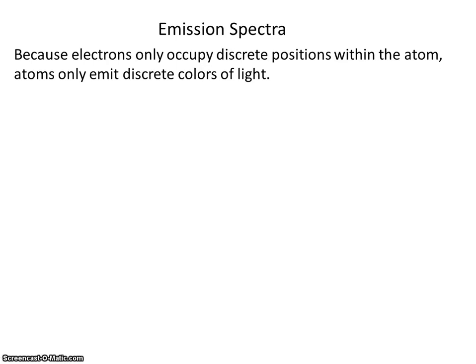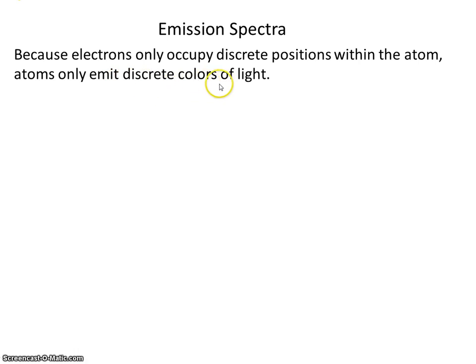In this video, we're going to be taking a look at the emission spectrum for hydrogen. Recall, because electrons only occupy discrete positions within the atom, atoms only emit discrete, or certain, colors of light.